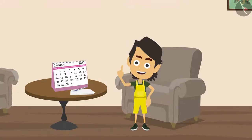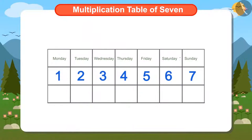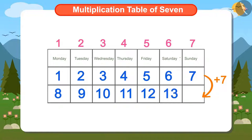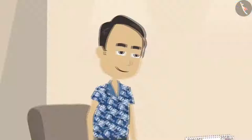Ayushman knows that there are 7 days in a week. So if 7 is added to today's date, 7th, then next Sunday's date will be easily known. If we add 7 to date 7th, the answer will be 14. Ayushman has found out that next Sunday the date will be 14th.